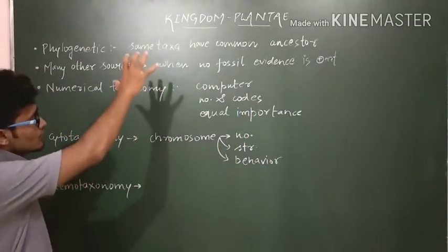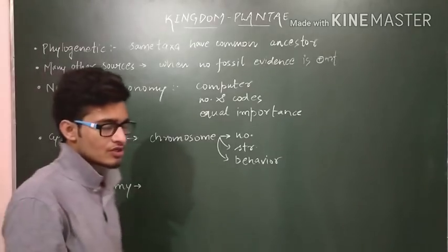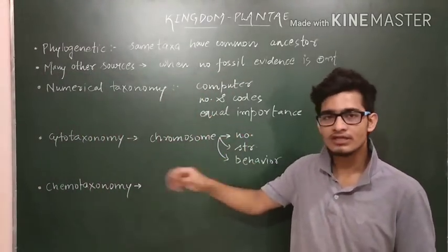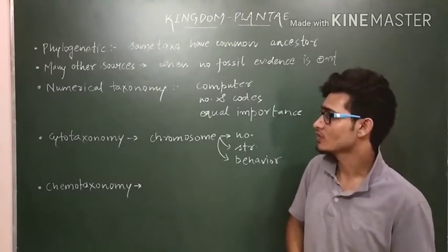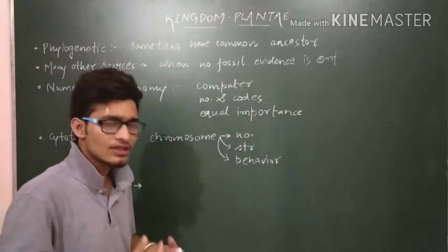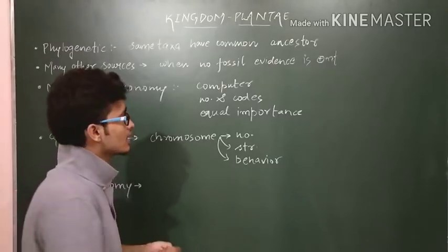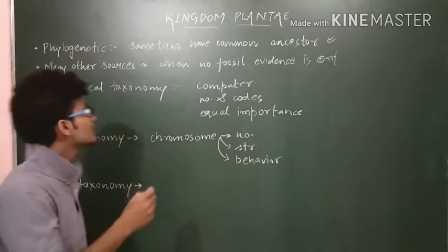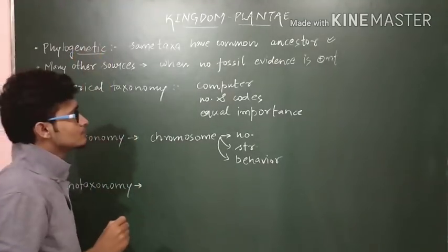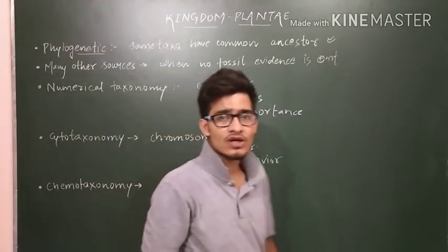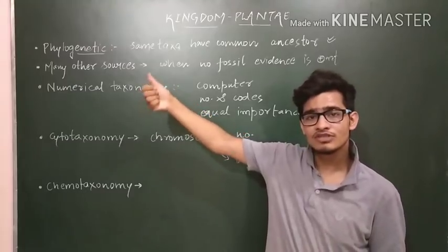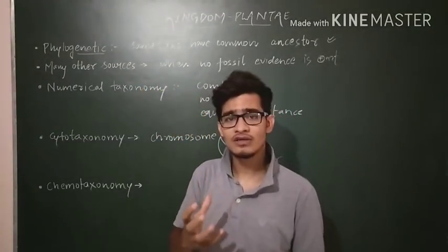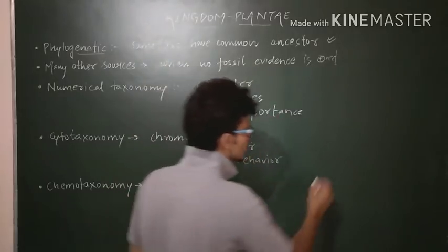Now we are going to talk about some other important taxonomical aspects. The very first thing is the currently accepted system, which is the phylogenetic system. What does the phylogenetic system say? It is based on evolutionary relationships between different kinds of organisms.